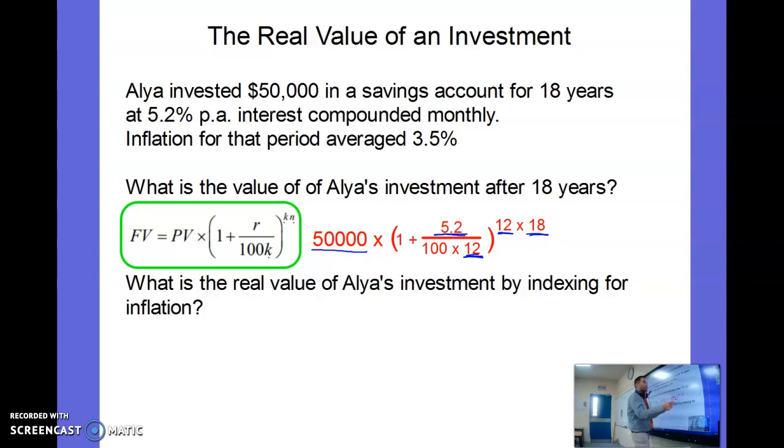Substitute all those values in, type in your calculator, and we find out that fifty thousand dollars 18 years later is now $127,230.56. Great profit, amazing!